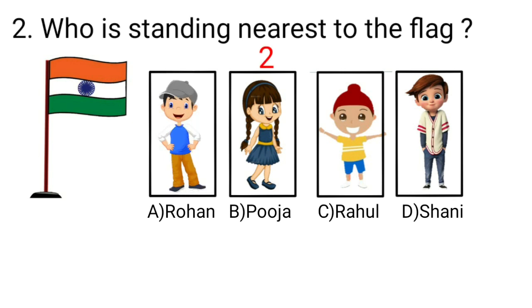Next after Rohan, at second position Puja is standing. At third position after Puja, Rahul is standing. And Shani is standing at fourth position after Rahul. So students, we know that the object which is closest to us is nearest to us. So here, as Rohan is closest and nearest to the flag, Rohan is the correct answer. So let's take option A, Rohan.